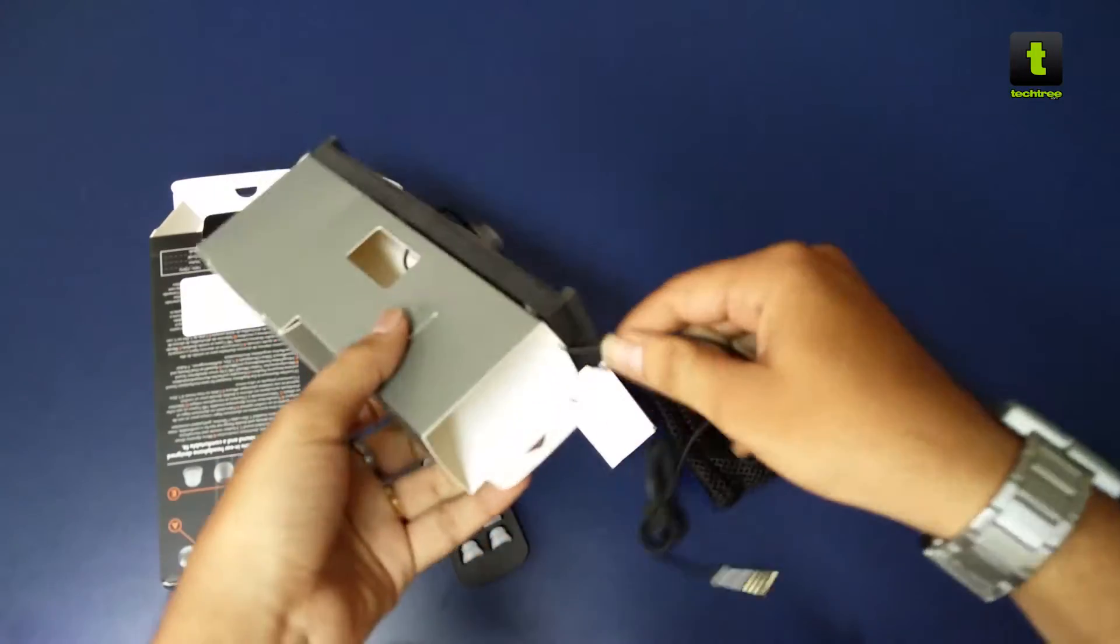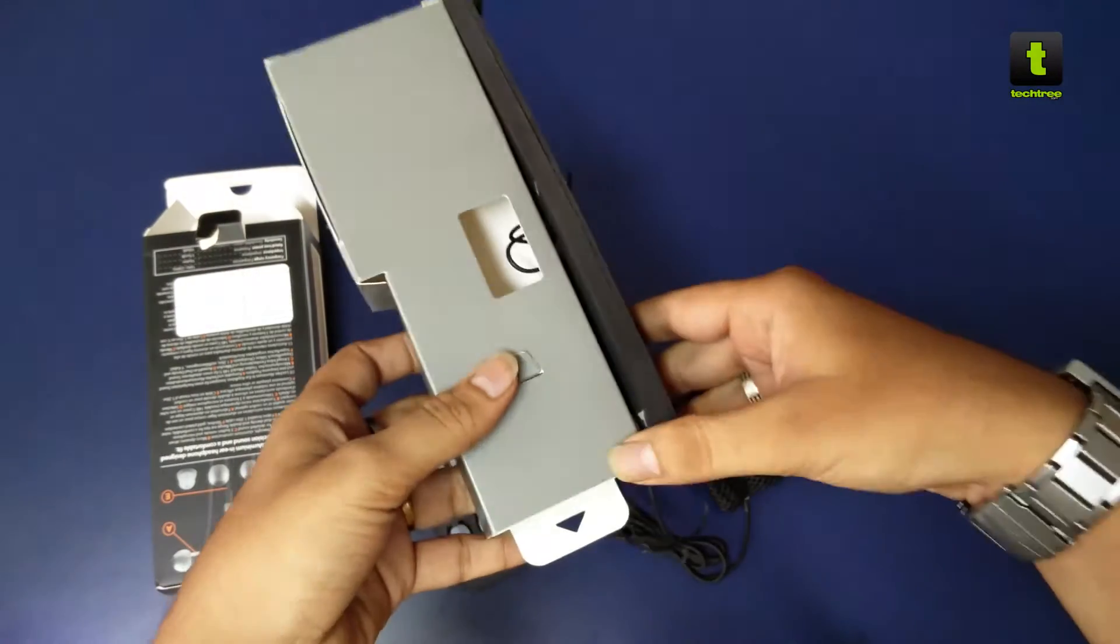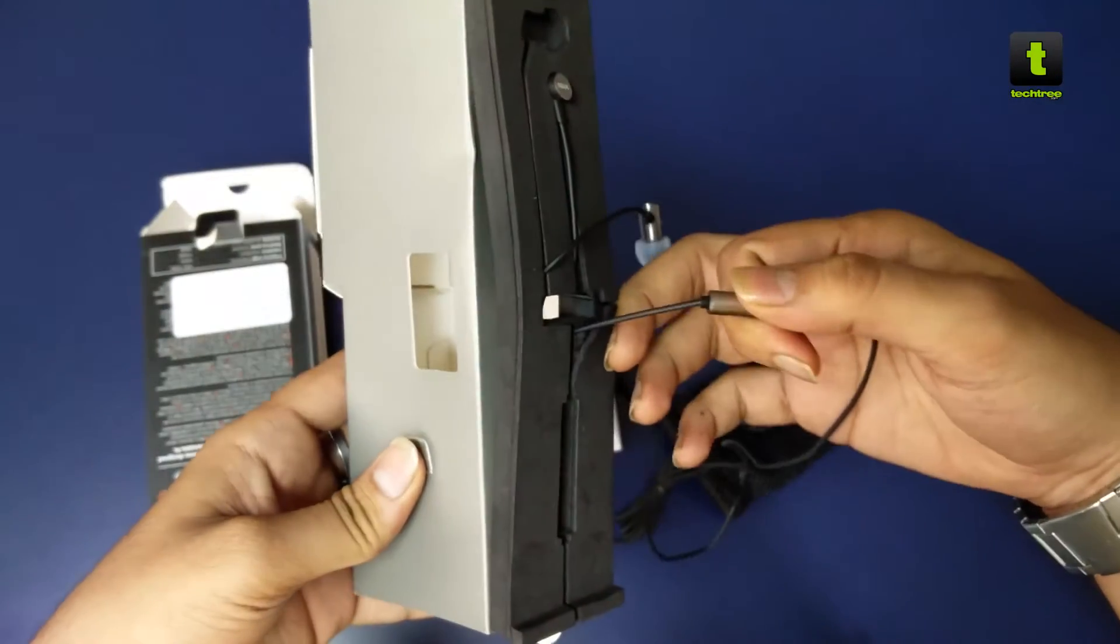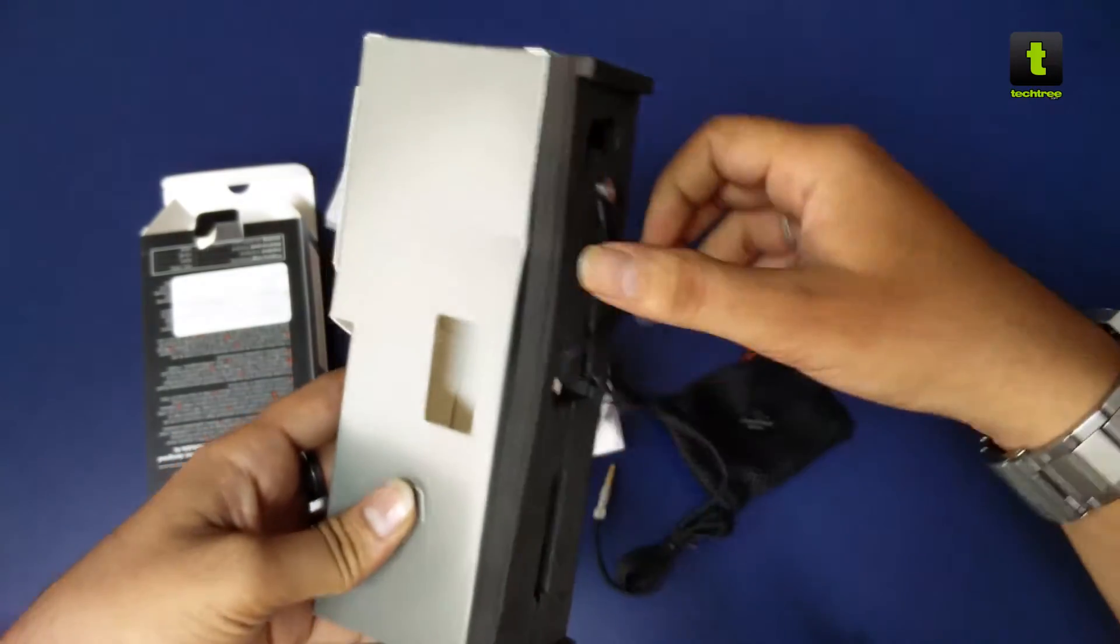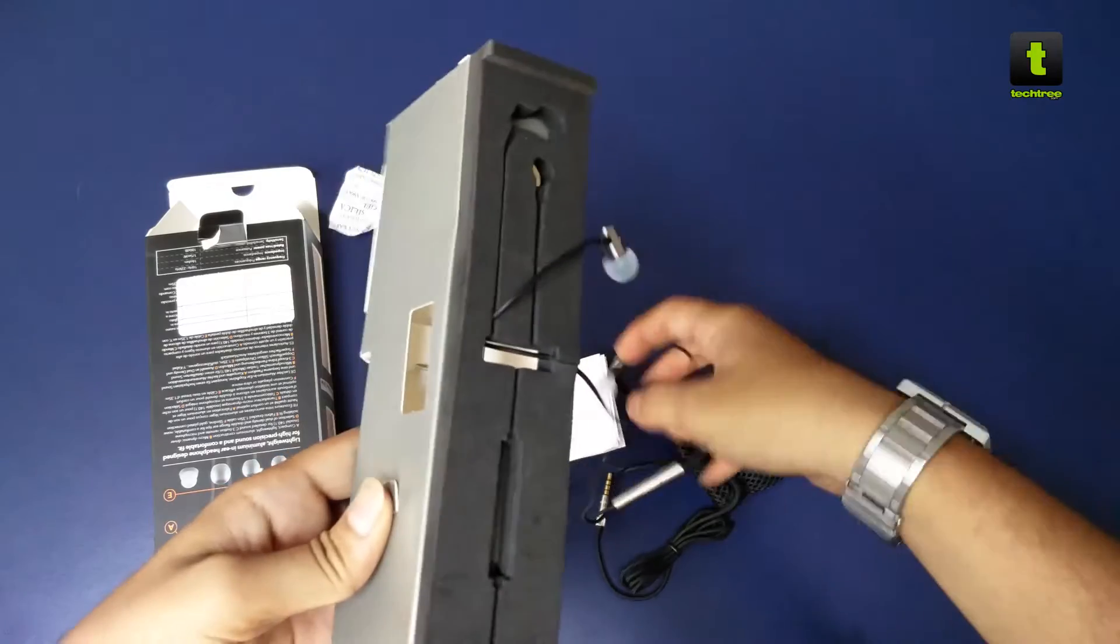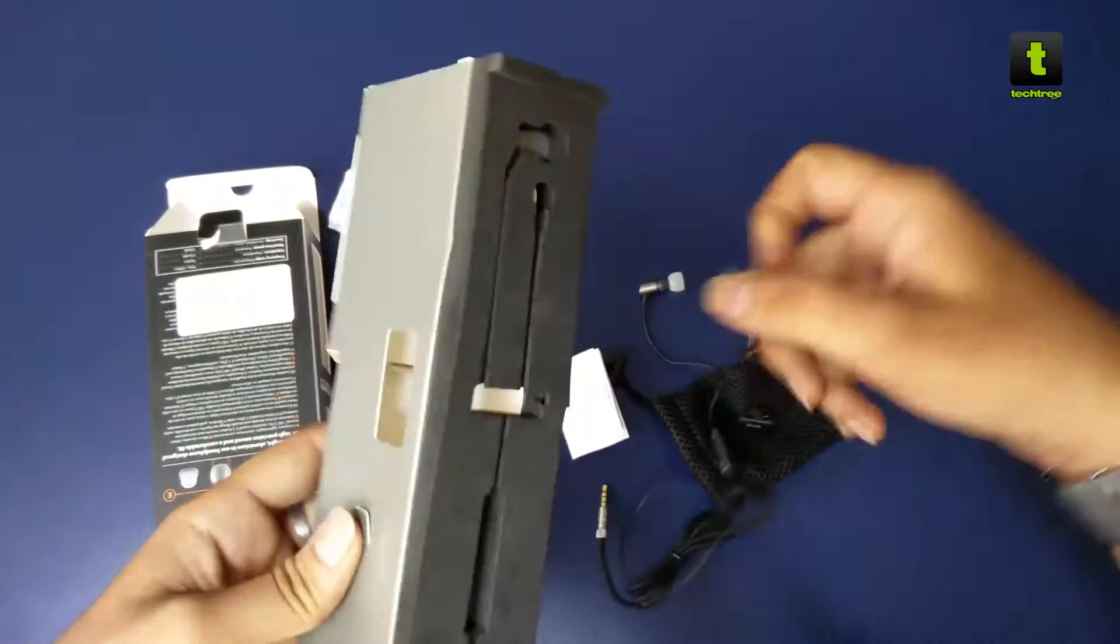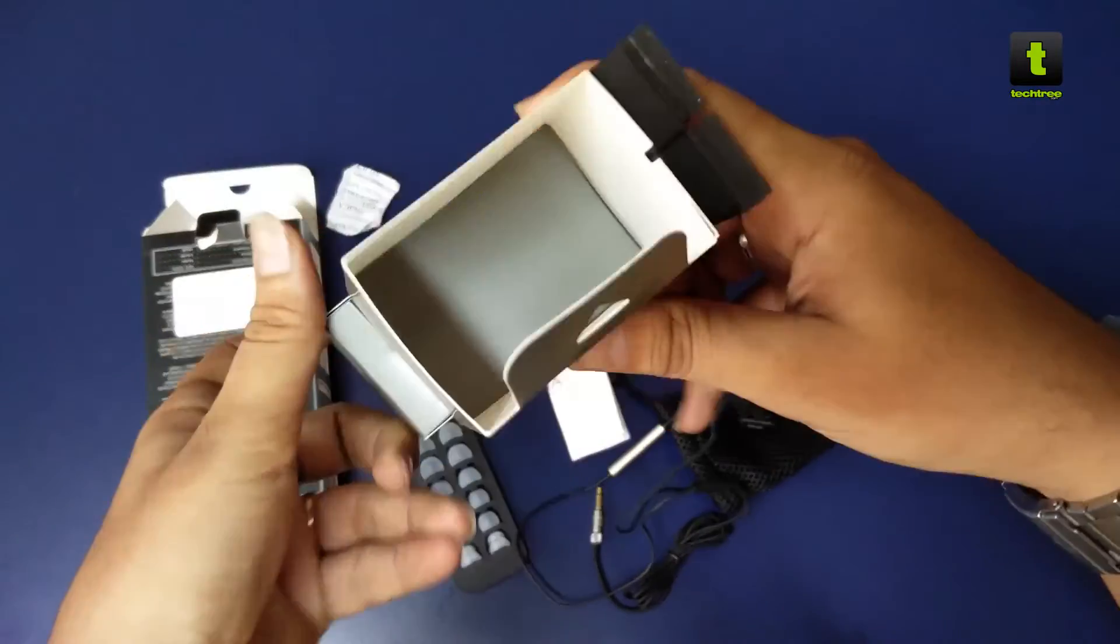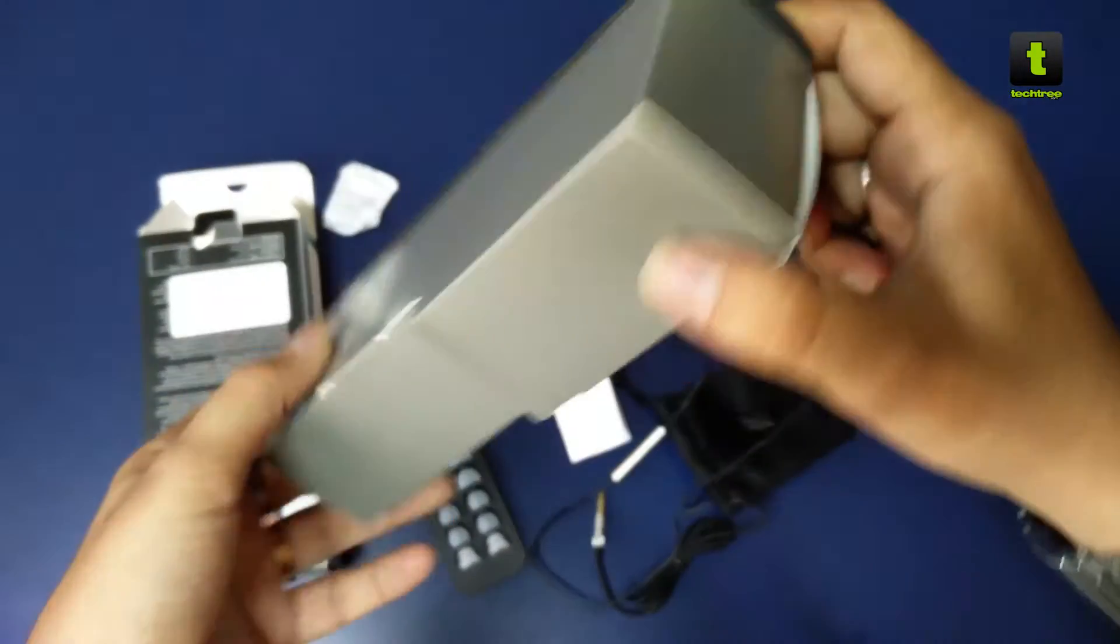And what do we have here - the wire. So we cannot remove this, I guess. Yeah, it's stuck, so we have to just take this out like this. Yes, the box is pretty much done, there's nothing inside, it's totally empty.